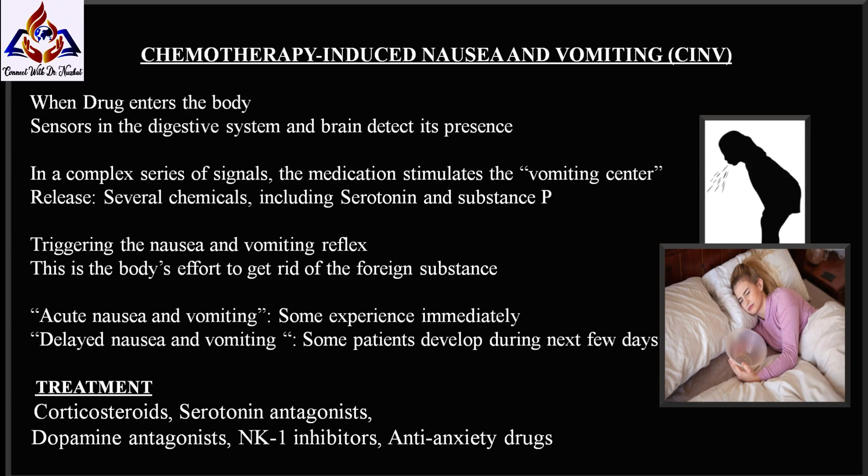Treatments associated with nausea and vomiting include corticosteroids, serotonin and dopamine antagonists, NK1 inhibitors, and anti-anxiety drugs. Corticosteroids are related to the natural hormone cortisol and are widely used to help prevent chemotherapy-induced nausea and vomiting. An example is prednisolone.